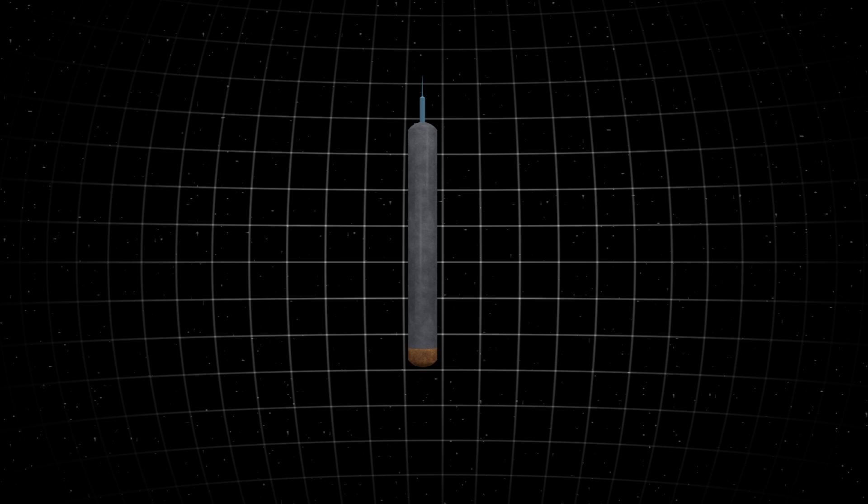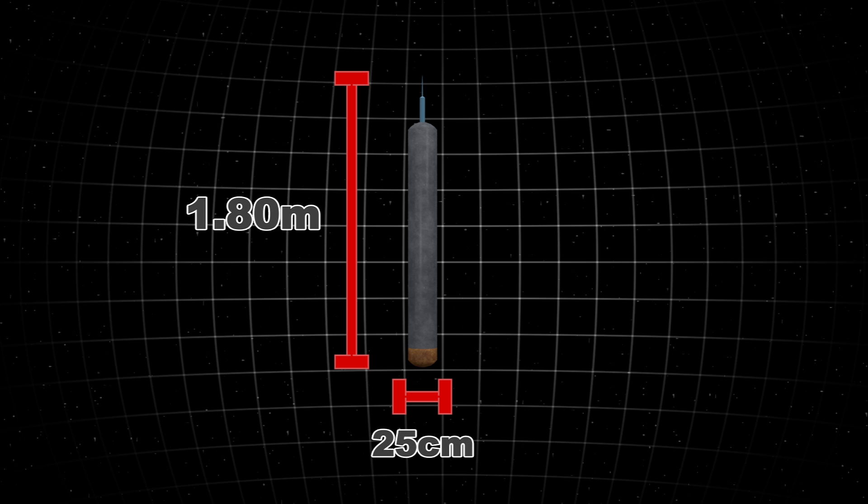In Alaska, NASA is testing the robot Valkyrie, a long, thin tube that stands 1.8 meters tall and has a diameter of 25 centimeters.